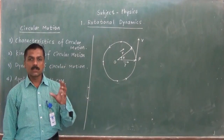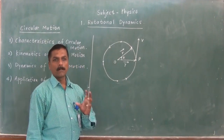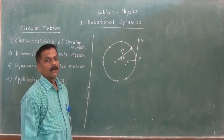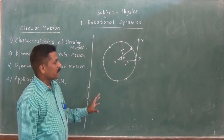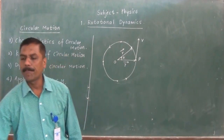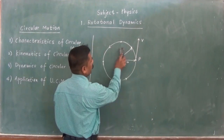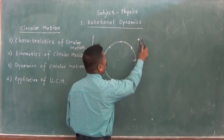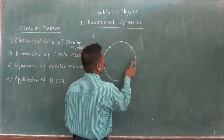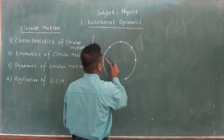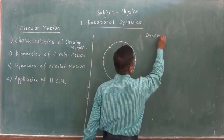This is the branch of mechanics which deals with the study of objects which are in motion when considering the forces at the moment — the forces which are responsible for the circular motion. So we can use the dynamic representation for the dynamics of circular motion.